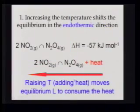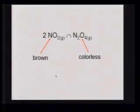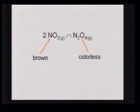So adding heat or raising the temperature should move this equilibrium back from N₂O₄ back to NO₂. As it happens, these two gases have different colors. NO₂ is a brown gas and N₂O₄ is a colorless gas. So we can see this equilibrium shift pretty easily.